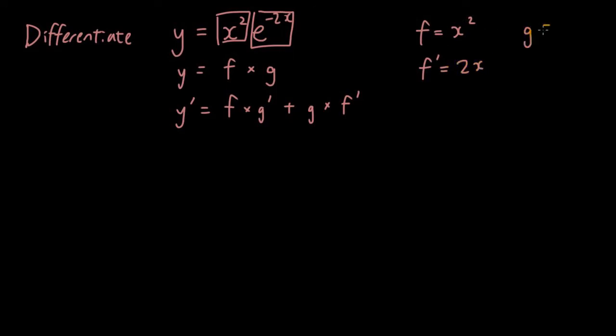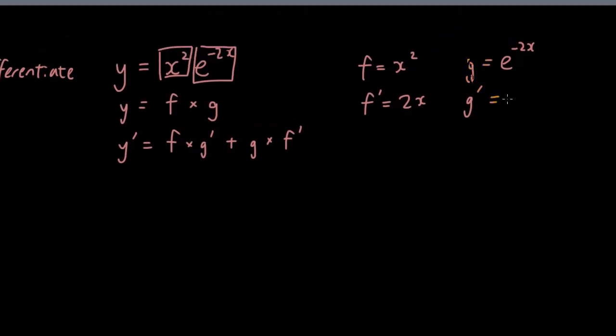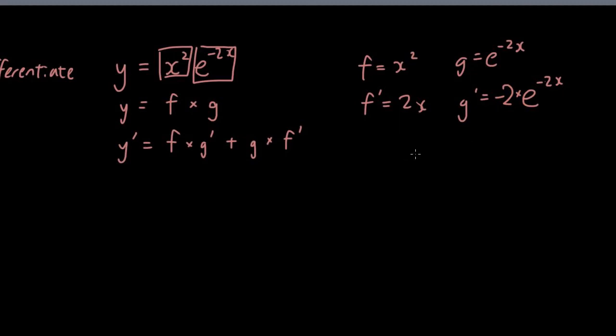Now let's do the same thing with g. g equals e to the power of negative 2x. And g dash, which is the derivative, is equal to... you're going to copy this down because that's how you differentiate exponential functions. And then you're going to differentiate the power, which becomes negative 2, and you're going to multiply it at the front. So the answer is just negative 2e to the negative 2x.